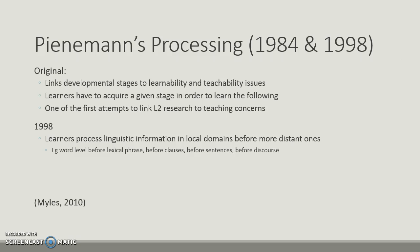Pienemann's processing theory originally linked developmental stages to learnability and teachability, meaning learners have to acquire a given stage in order to learn the following stage. This was one of the first attempts to link second language research to teaching concerns. In 1998, Pienemann expanded to say that learners process linguistic information in local domains before more distant ones — morphology before clauses, before syntax/sentences, before discourse. We have to learn certain stages before we can acquire others.